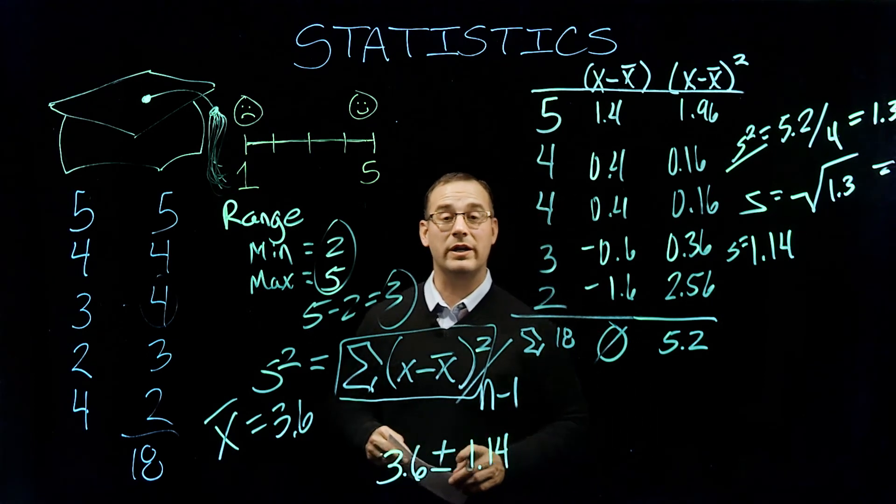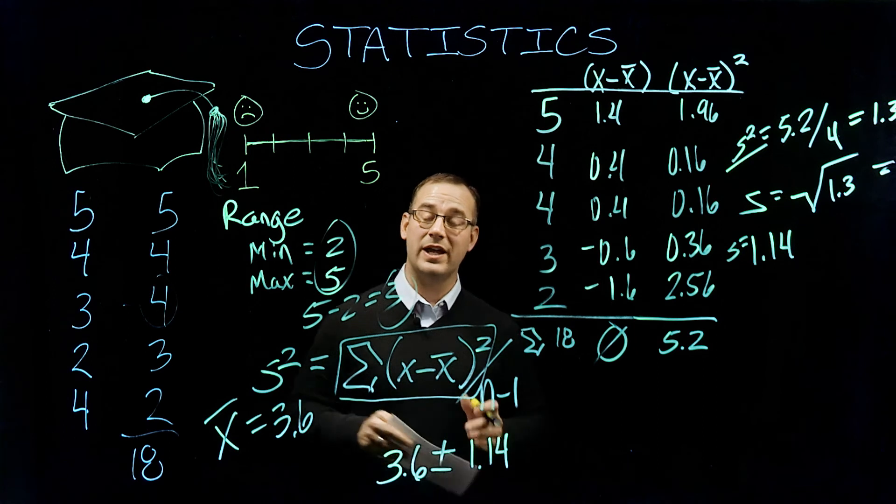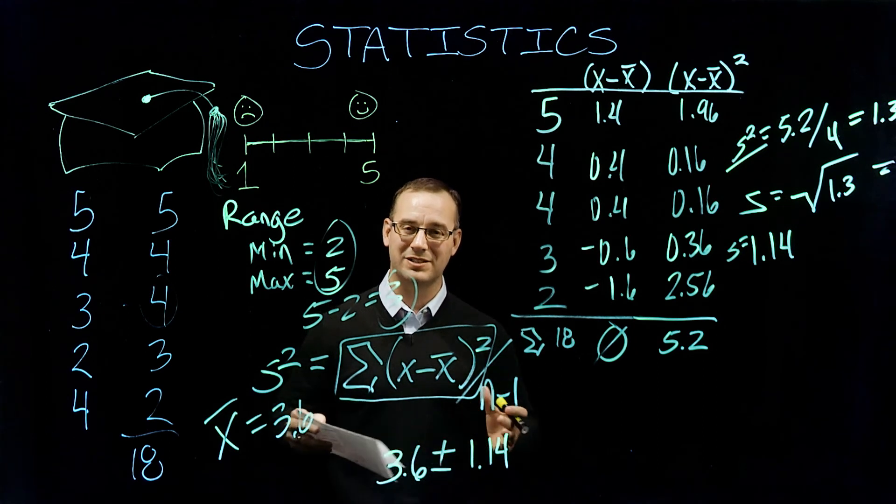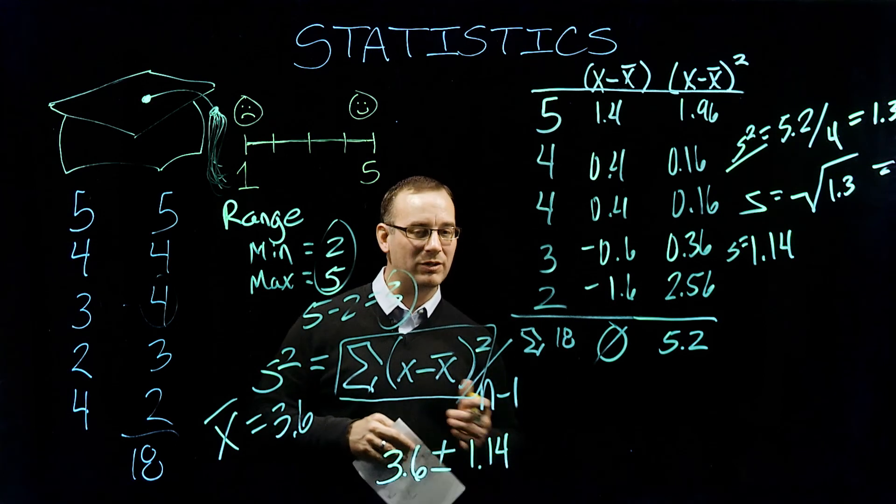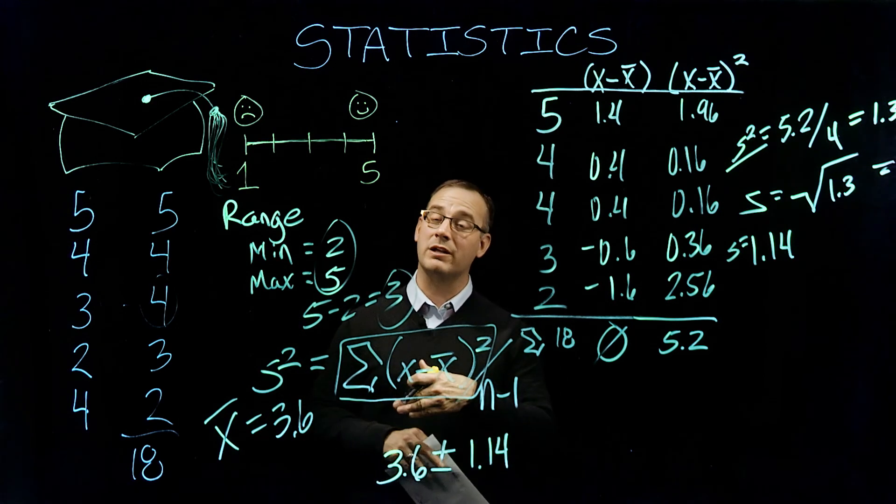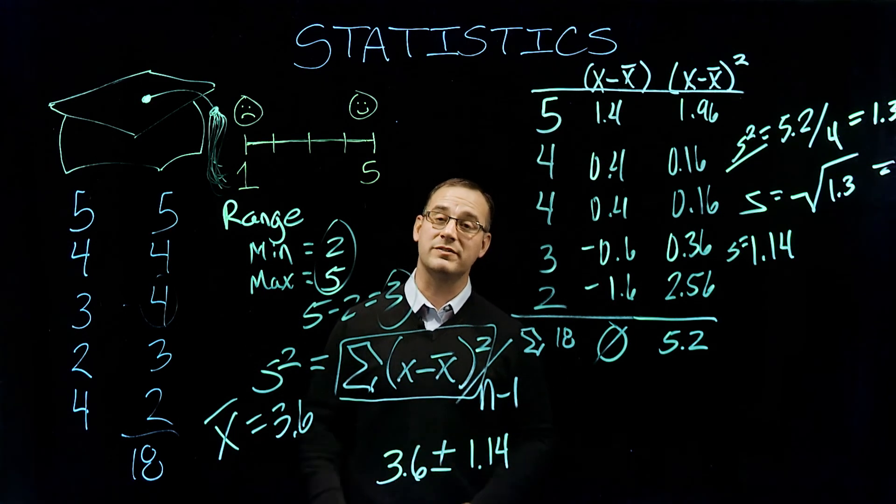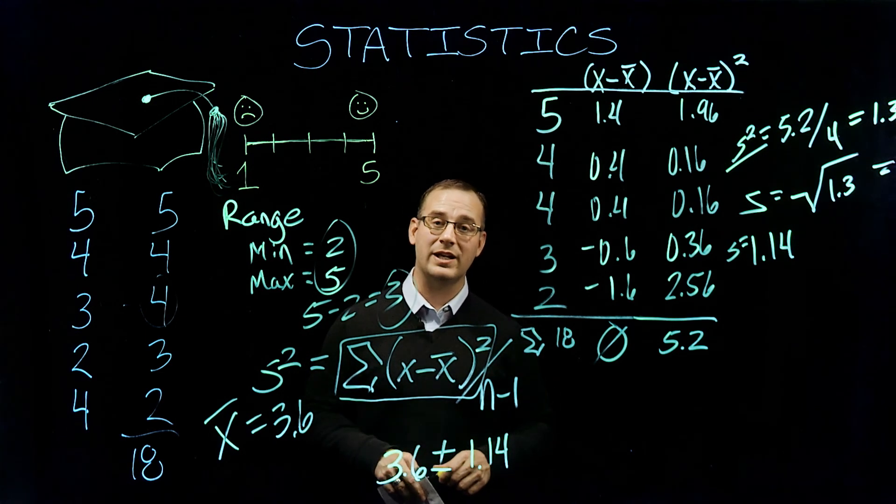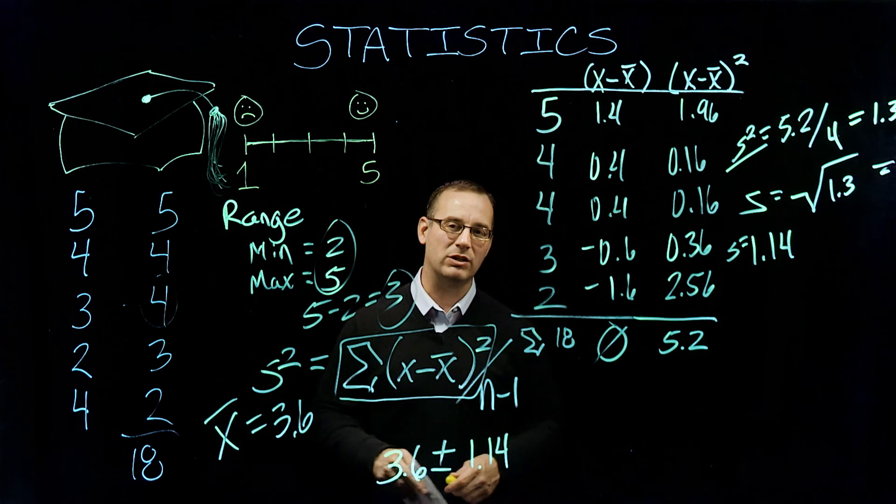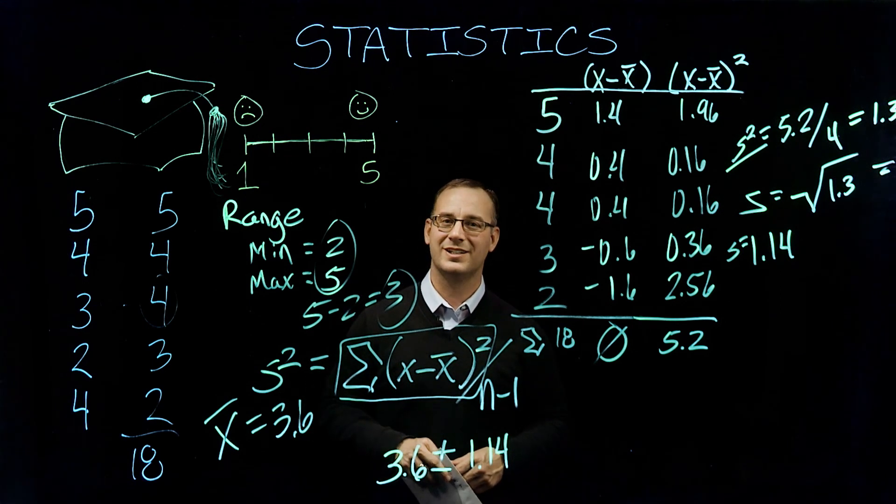So that's a bit of a review on standard deviation, variance, and range, which gives us our variability. So stick around. If any of those concepts are confusing, you can go back and review the video on measures of central tendency. Take a look at this video again on variability, and in the next video we're going to be taking a look at confidence intervals. Thank you.